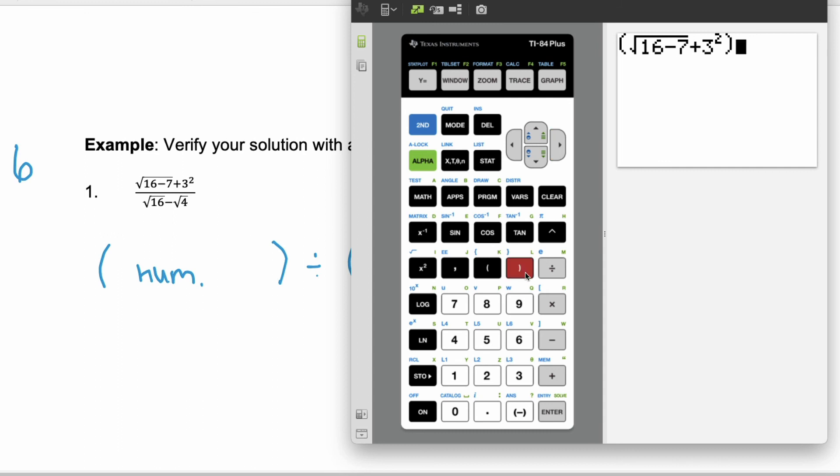So let's close the parentheses, enter the division and start parentheses to do our denominator. We have a radical, so we do second and we get that square root. We enter the 16. Again, I have to hit over to get out of that square root. And then I hit subtract. I enter another square root. And then 4.